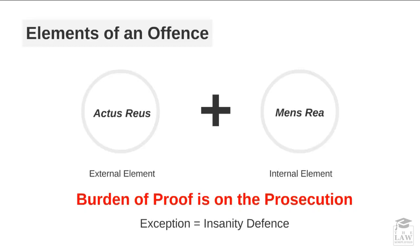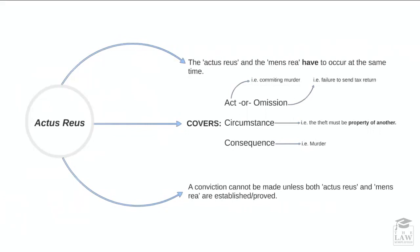On the one hand, you must fulfill the actus reus, or the external element — the actual physical act itself of the crime. And you must also have the mens rea, or the internal element, the mental intent to do such an act. The burden of proof is on the prosecution, except for instances where there is a defense of insanity, which we will look at later on.